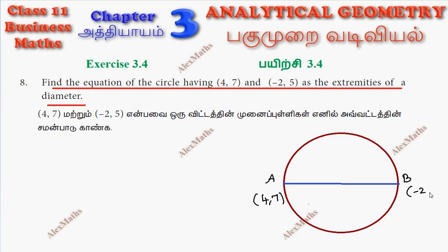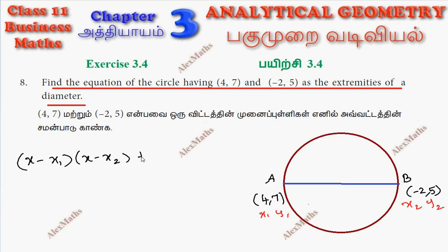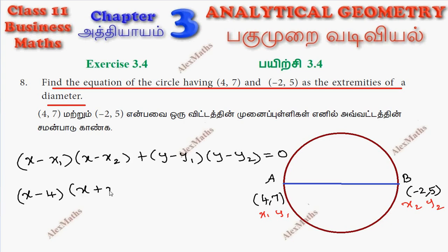The endpoints are: point A is (4, 7), this is x1, y1; and point B is (-2, 5), this is x2, y2. The formula is: (x - x1)(x - x2) + (y - y1)(y - y2) = 0. Substituting: (x - 4)(x + 2) + (y - 7)(y - 5) = 0.